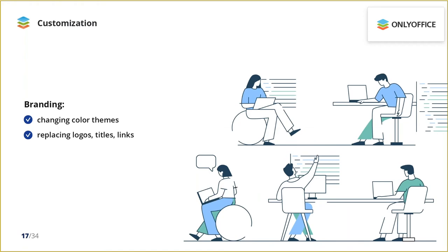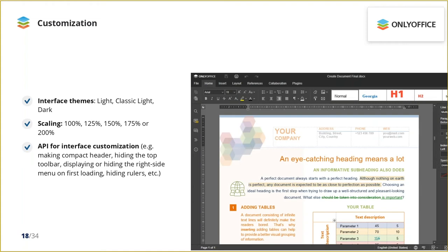The white label option allows using OnlyOffice Docs under your corporate brand — you can change the presence or absence of some buttons and links, replace logos, and editor owner details. Further customization options include three interface themes: light, classic light, and dark, allowing comfortable work in low light environments, plus multiple scaling options and API-based interface adjustments like compact headers or hiding the right side menu on first loading.